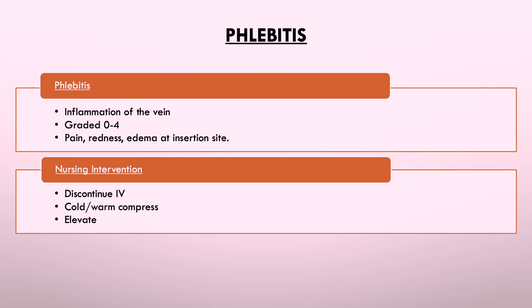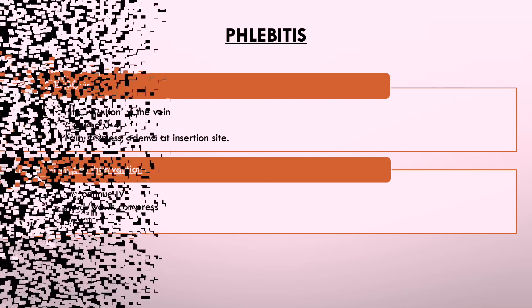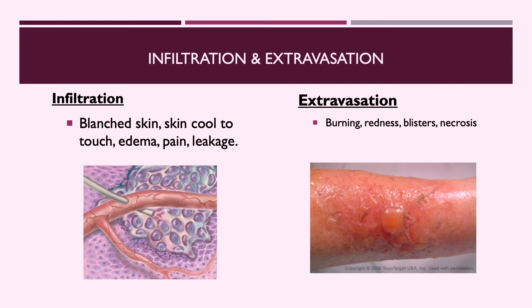Phlebitis is graded on a scale of zero to four. Manifestations include pain, redness, and edema at the insertion site. Nursing interventions include discontinuing the infusion at the first sign of phlebitis (at 1+ on the scale), applying warm or cold compress to the affected site, and elevating the extremity to prevent venous return and further inflammation.